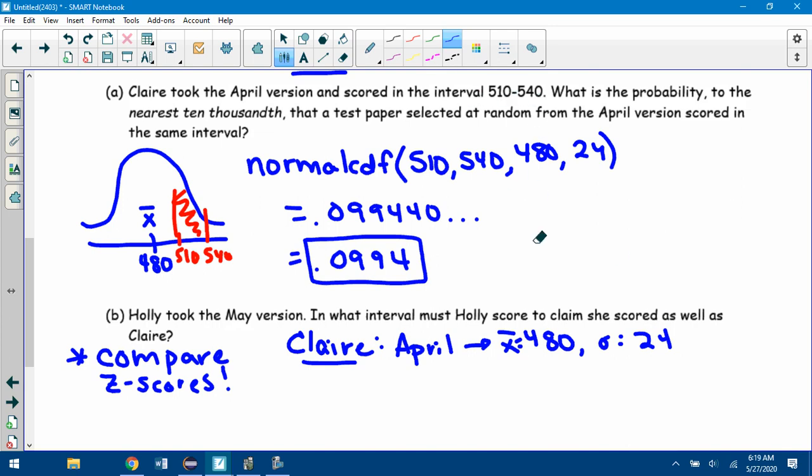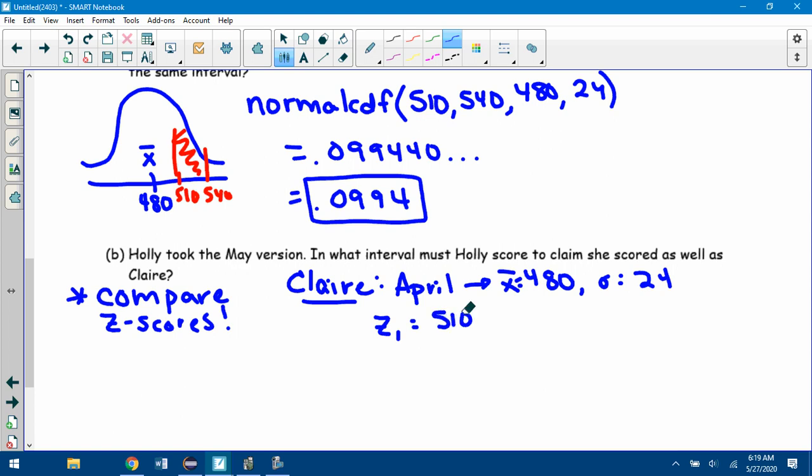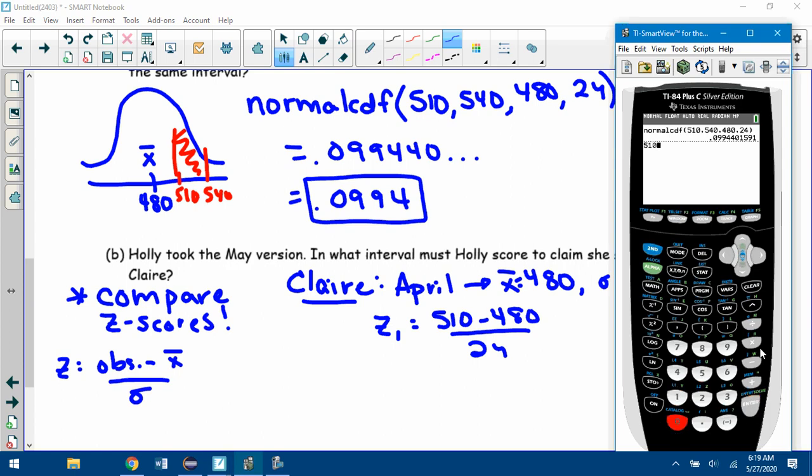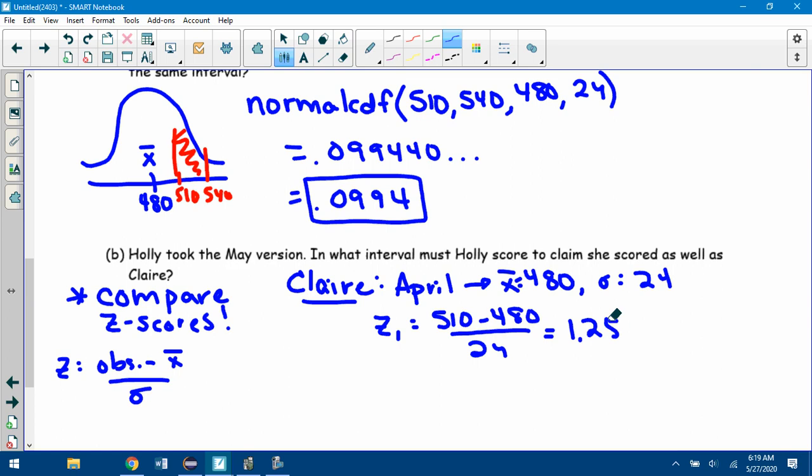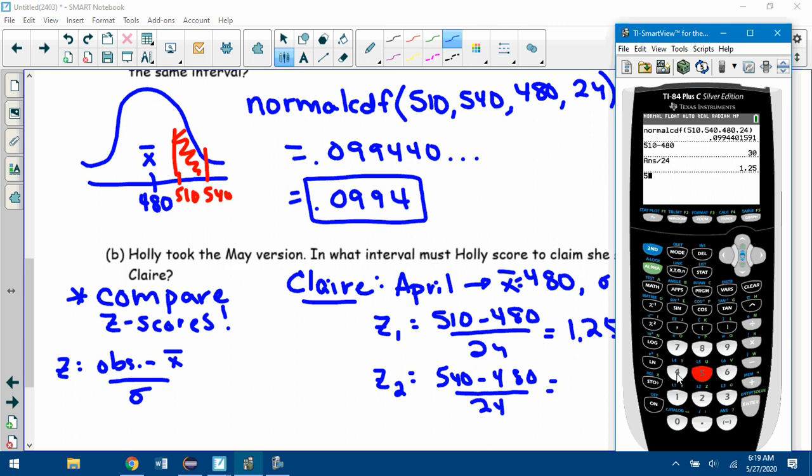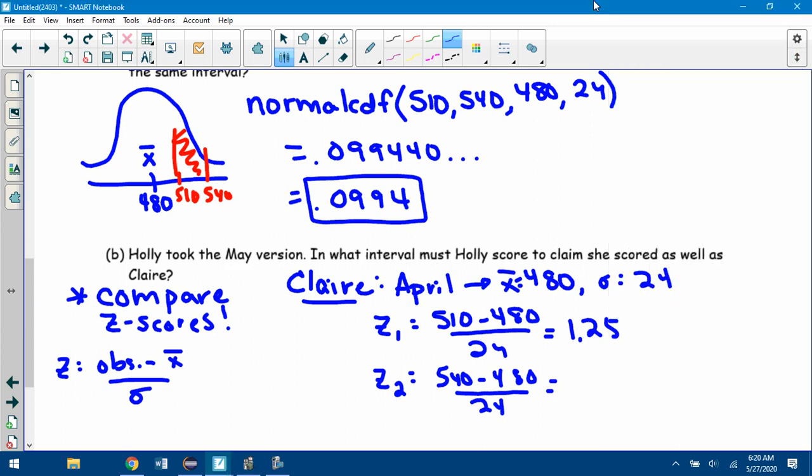So Claire's interval of 510 to 540, let's see what her z-scores would be. Her lower z-score would be 510 observed minus the mean 480 over the standard deviation. Remember what z-scores do: it's the observed, so the value from this study, minus the mean over the standard deviation. So if you do that, 510 minus 540, hit enter before you divide by 24, you get 1.25. So her lower z-score, she's 1.25 standard deviations above the mean. The upper z-score would be 540, her upper value, so 540 minus 480 divided by 24. 540 minus 480, hit enter, divided by 24, and you get 2.5.